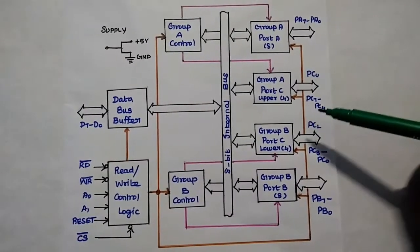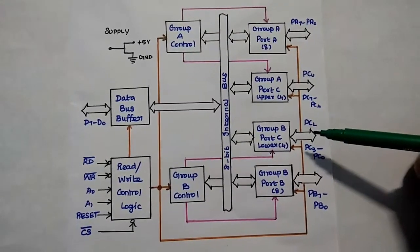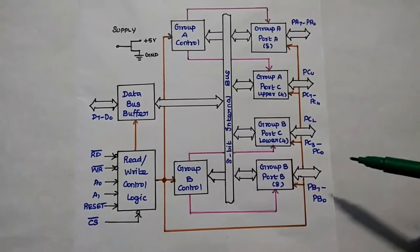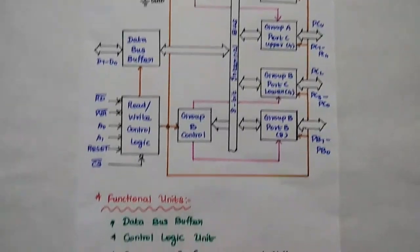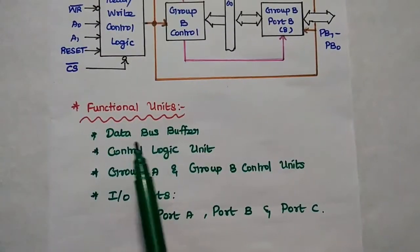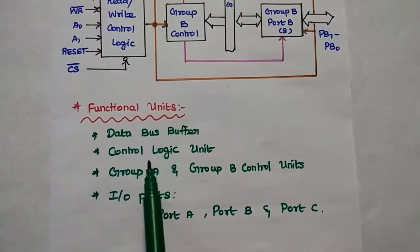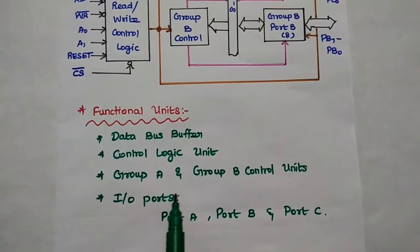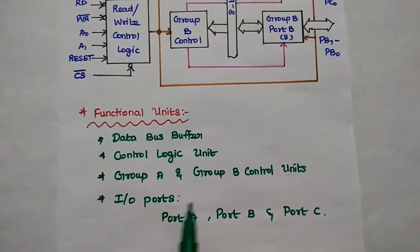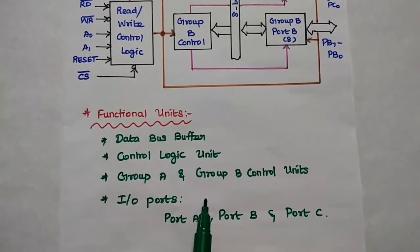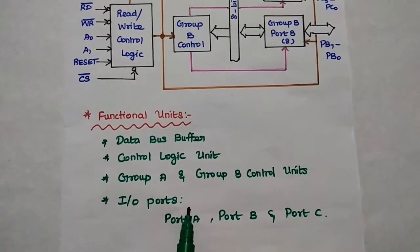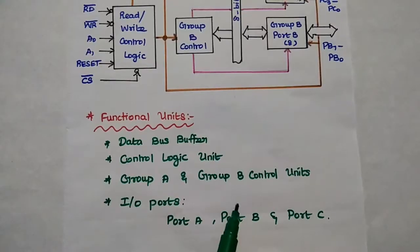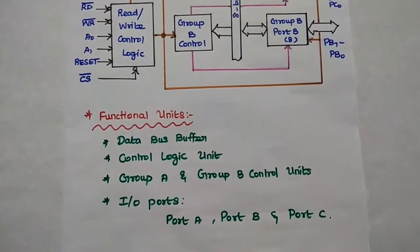The input/output ports are used to transfer data between the processor and input/output devices. The functional units are: Data Bus Buffer, Control Logic unit, Group A Control, Group B Control, and I/O ports grouped as Group A and Group B. Group A has Port A and Port C upper bits; Group B has Port B and Port C lower bits.